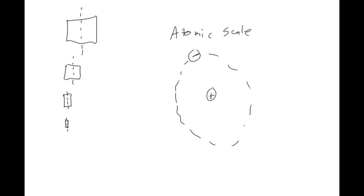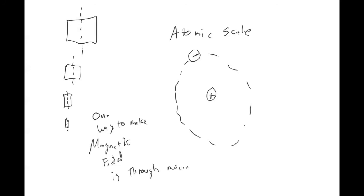That's because one of the ways that you can make a magnetic field is through moving charges — or in other words, a current. Anytime you have charges moving, that means you have a current. So even on the atomic scale, you have electrons that are doing their quantum movement; they're moving around, and that movement creates a current, and that current can make a magnetic field.